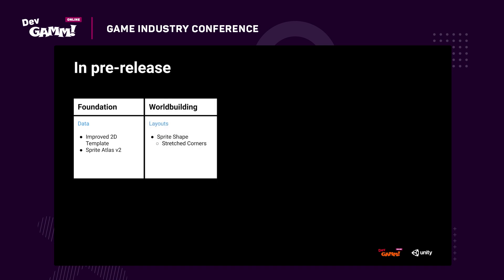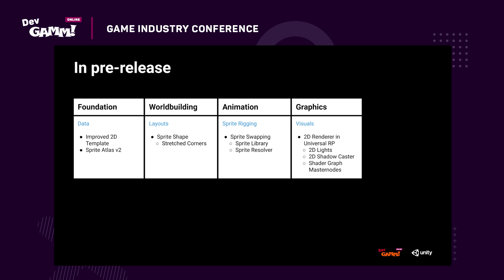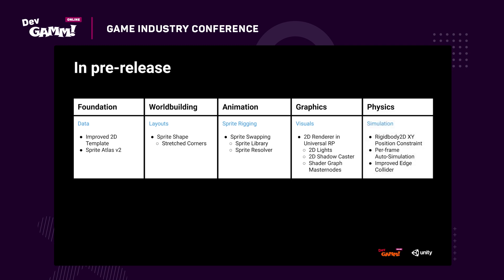Sprite shape has a new stretched corner option that doesn't require a corner sprite to be defined. And 2D animation has two experimental features to support sprite swapping in the form of a sprite library and a sprite resolver. There are lots of exciting developments in 2D graphics, focused around the new 2D renderer in the Universal Render Pipeline. These include 2D lights, 2D shadows, and shader graph masternodes for lit as well as unlit sprites. And in physics there are improvements to rigidbody 2D XY position constraint, which makes a rigidbody completely solid under any force and has almost zero runtime cost.